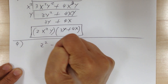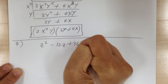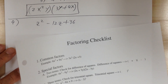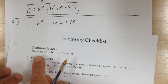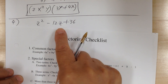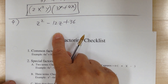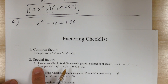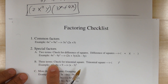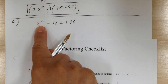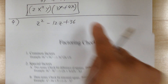Number 4: you have z² - 12z + 36. Step 1, common factor — nothing to factor out. Go to step 2. This is a special factor — 3 terms — so check for perfect squares. The first term is a square and the last term is a square, so you want to try that.